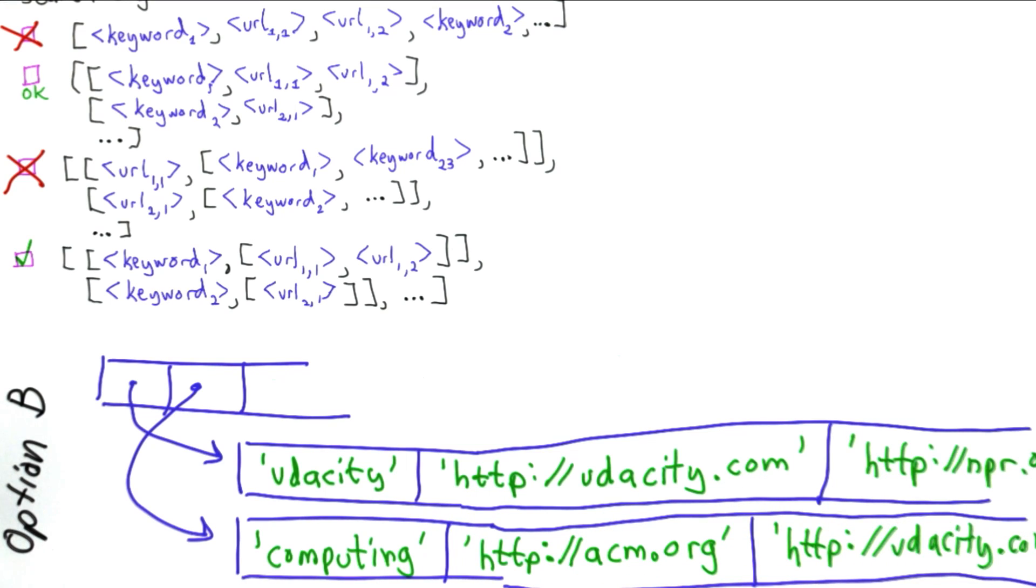This has a big advantage over the first two options. It means it's easy to tell the keywords from the URLs. The keyword is always the first element of the list, and unlike the previous option, it's also easy to go through the keywords. For each list contained, we just need to look at the first element to see if that's the keyword we're looking for.